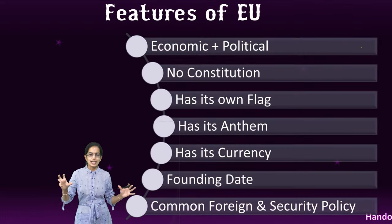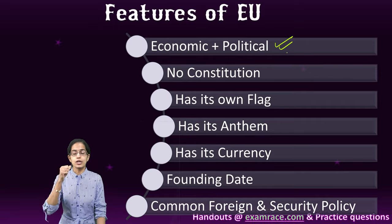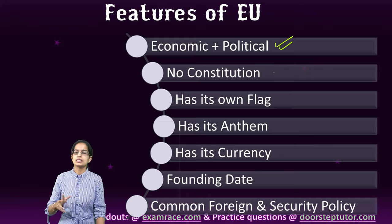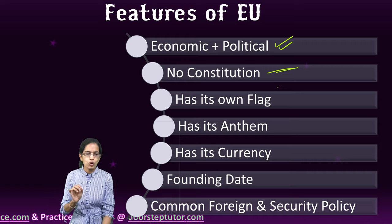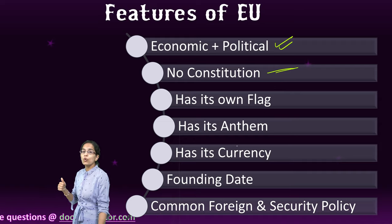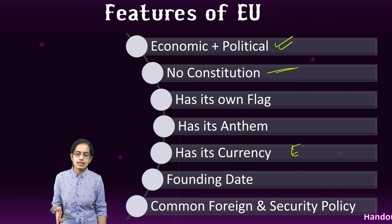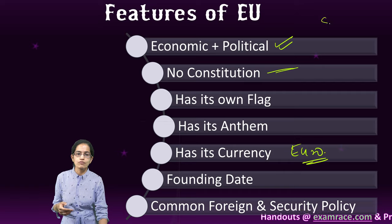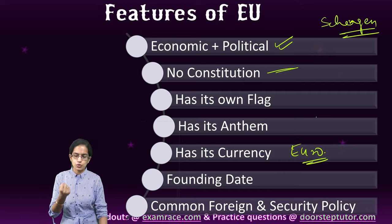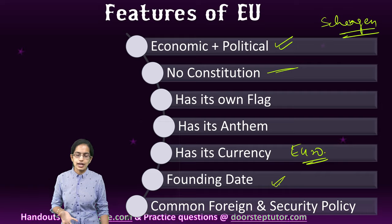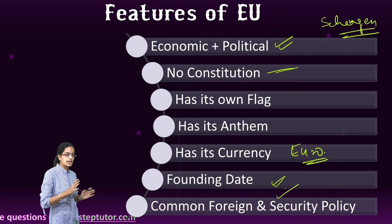If we talk about the highlights, it was predominantly a cooperation in terms of economic and political cooperation. There was no constitution that was formed, but despite that it had its own flag, its own national anthem, the common currency in the name of Euro, and the common visa in the name of Schengen. Those are some examples that speak to the unity within the European Union. The founding date remained common, and there were common issues on foreign security policies.